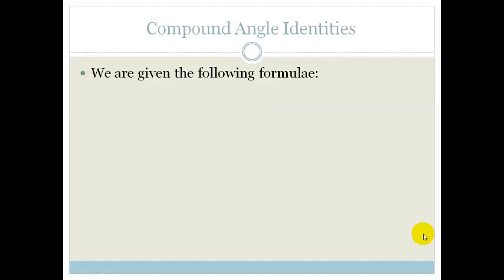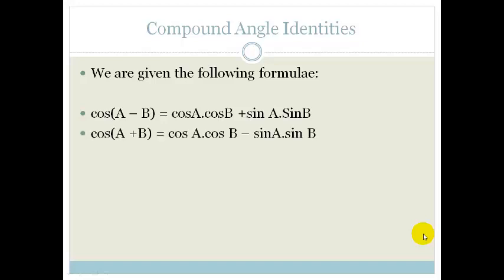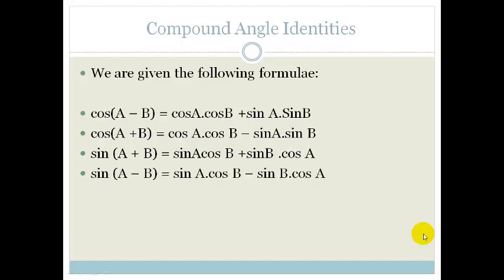We are given the following formulas and they're on the formula sheet. We are told that cos(A - B) = cos A cos B + sin A sin B. Cos(A + B) = cos A cos B - sin A sin B. Sin(A + B) = sin A cos B + sin B cos A. And sin(A - B) = sin A cos B - sin B cos A.